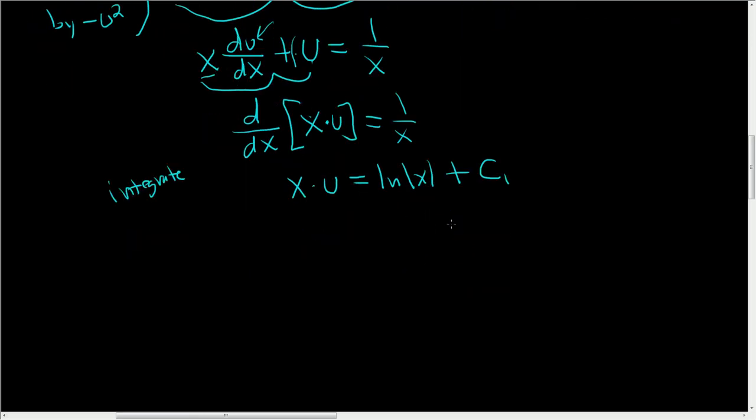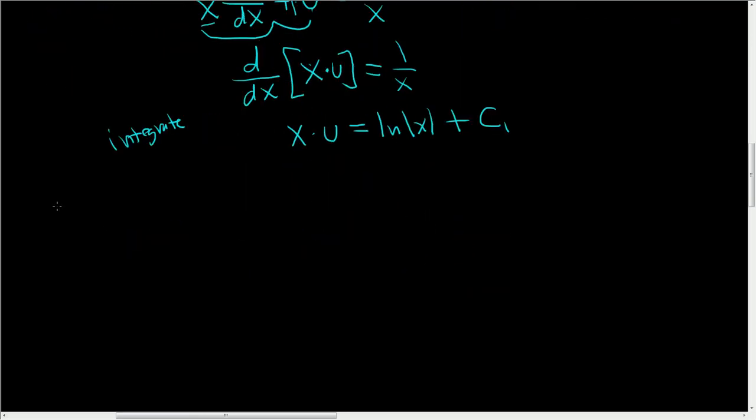Now to finish, we have to recall that u was 1 over y. So recall, u was 1 over y. So x over y, because u is 1 over y, is equal to the natural log of the absolute value of x plus c1. Now how far do we keep going? Can we solve this for y? Sure, we can multiply both sides by y and divide by this. But